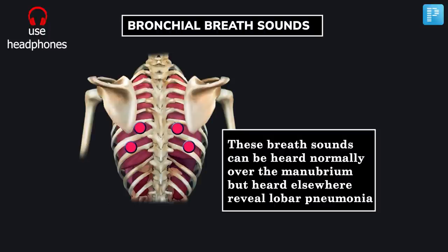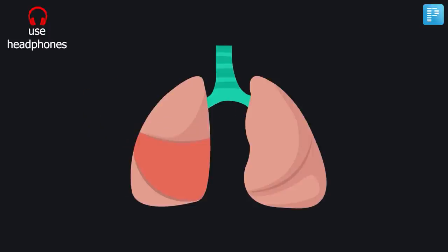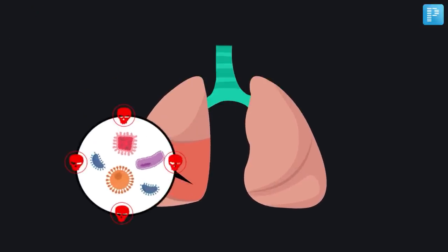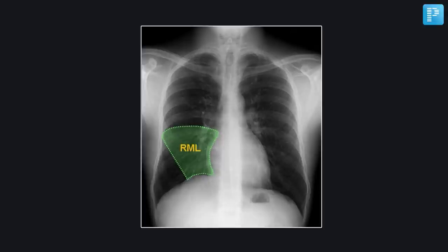Bronchial breathing is seen in cases of lobar pneumonia, and you can notice on the X-ray a very characteristic right middle zone pneumonia producing a silhouette sign.